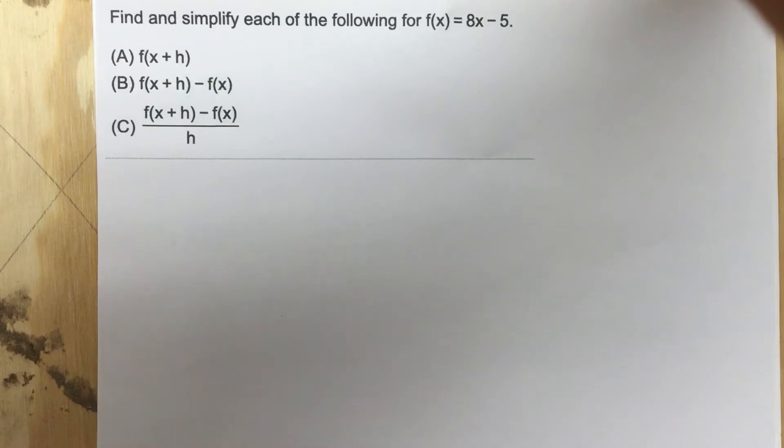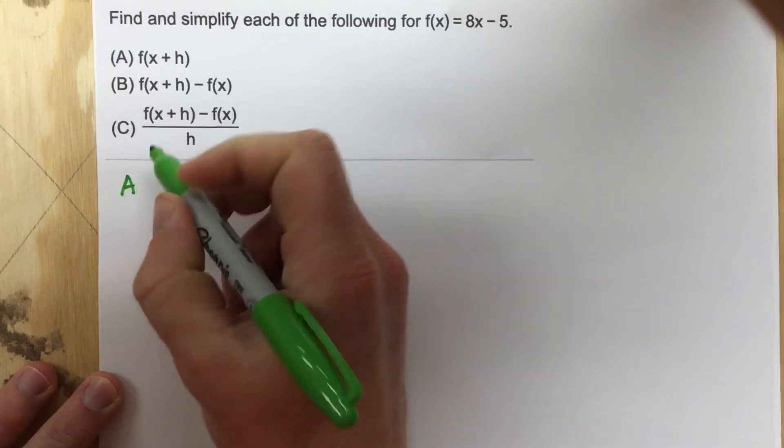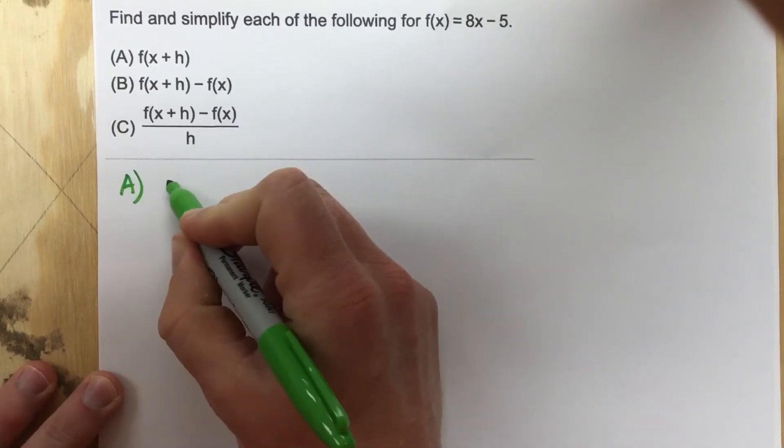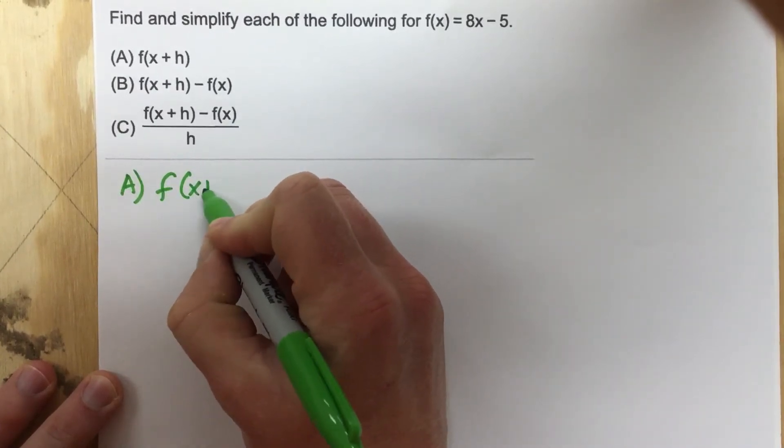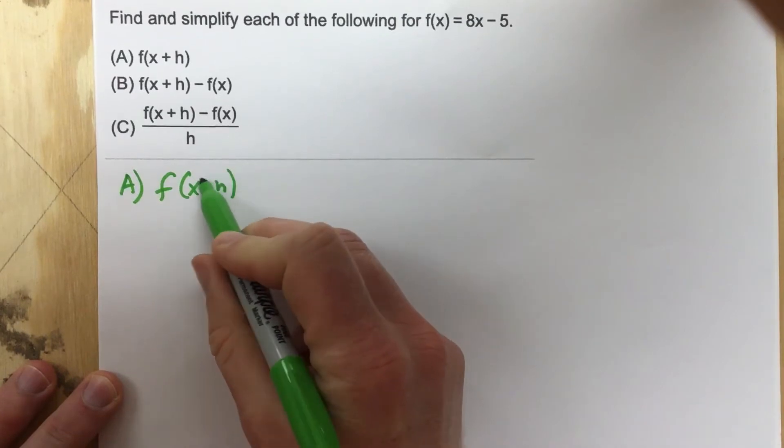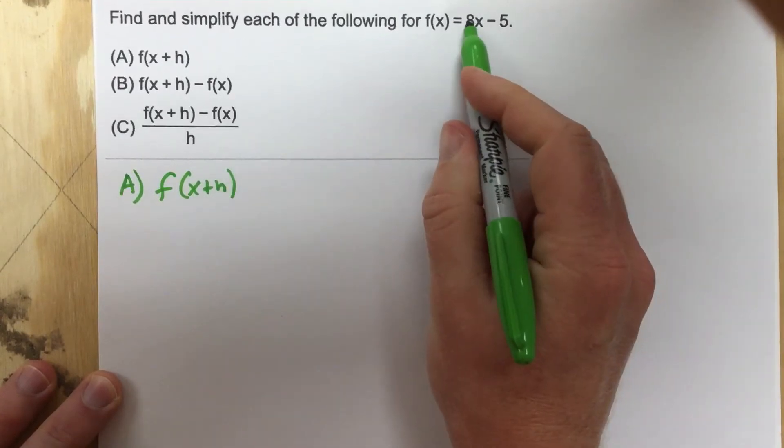For part A, they want us to do f(x + h). So let's go ahead and write that out. Part A, f(x + h), which means we're just going to take x plus h and we're going to plug it into our function and